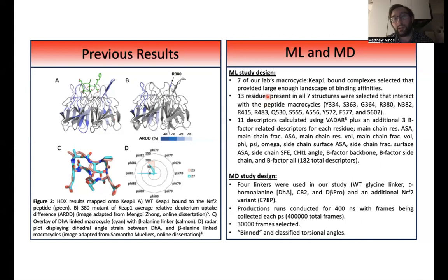So in my study, I'm hoping to bring two different approaches for the machine learning study. I'm using seven of our lab's 22 previously published PDB structures of KEEP-1 bound to different macrocyclic peptide inhibitors. I'm using seven because if you're familiar with machine learning, usually your data output is very large. So seven was a good kind of pilot study for me to start with.